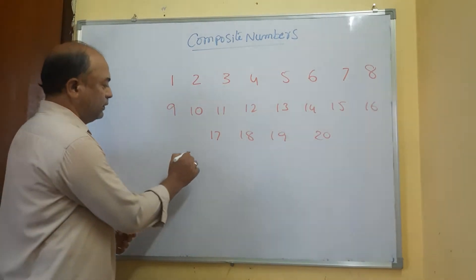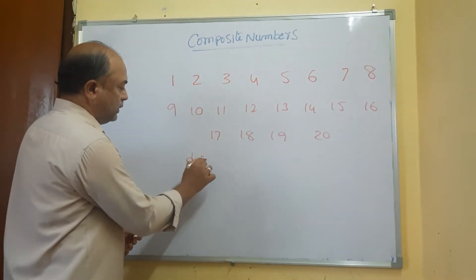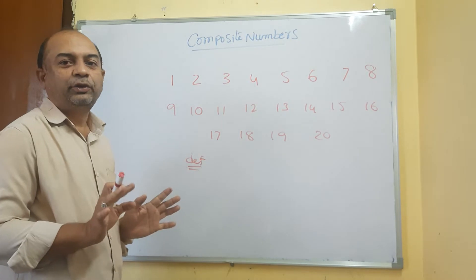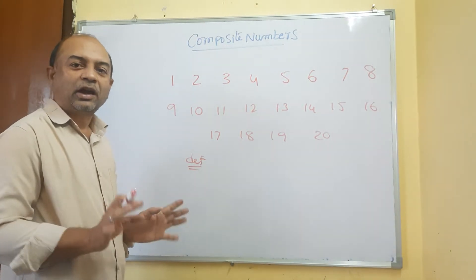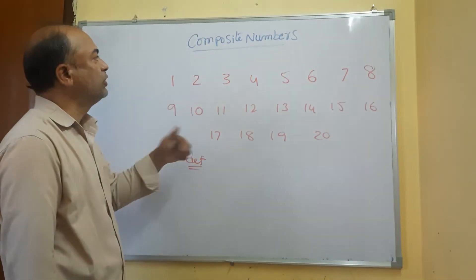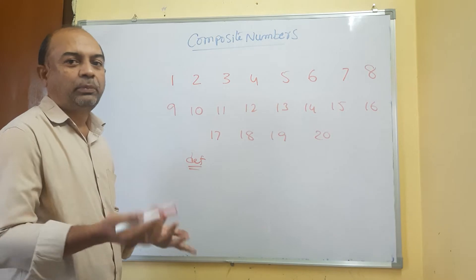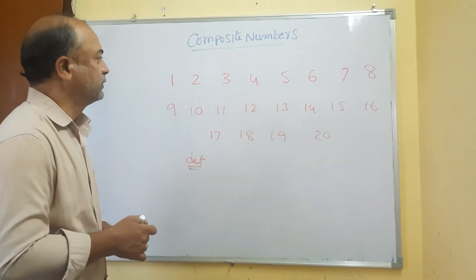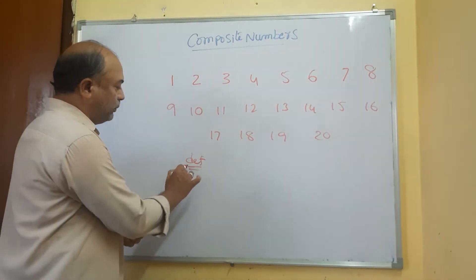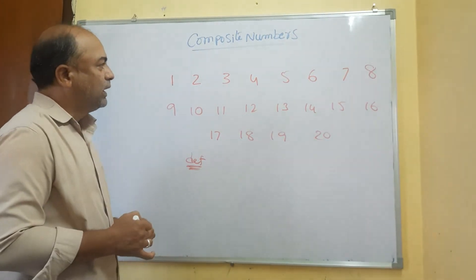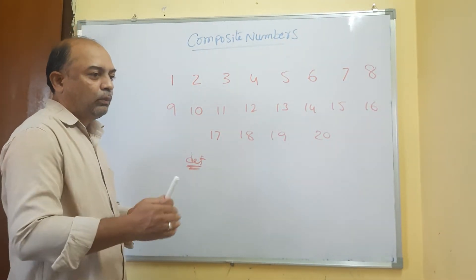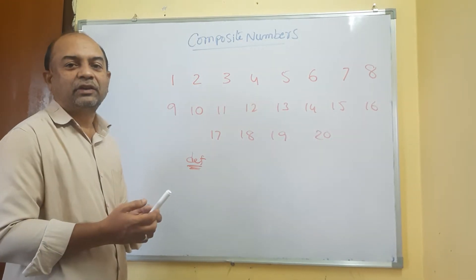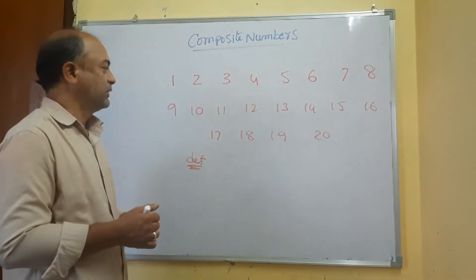The definition is: numbers which are not primes are said to be composite numbers. In other words, numbers having more than two factors are said to be composite numbers.